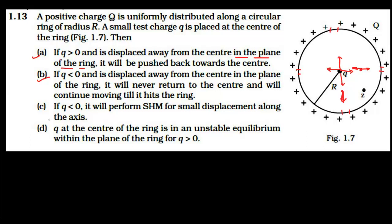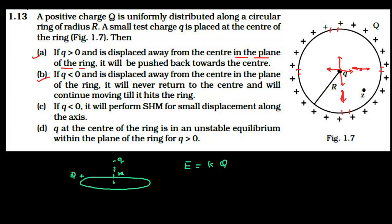Option C states that if q is negative it will perform simple harmonic motion for small displacement along the axis. Consider the ring with positive charge Q. If the negative charge is displaced from the center along the axis by a distance x, the electric field along the axis is given by: E = kQ / (R² + x²)^(3/2) · x.